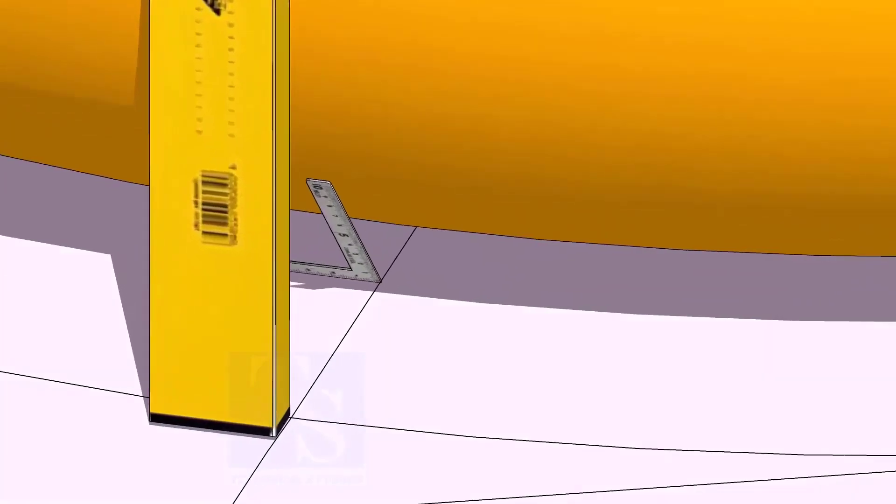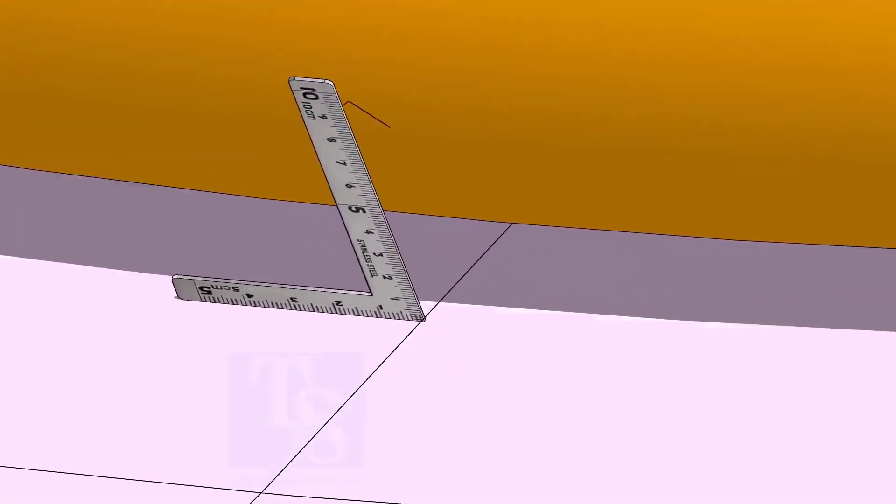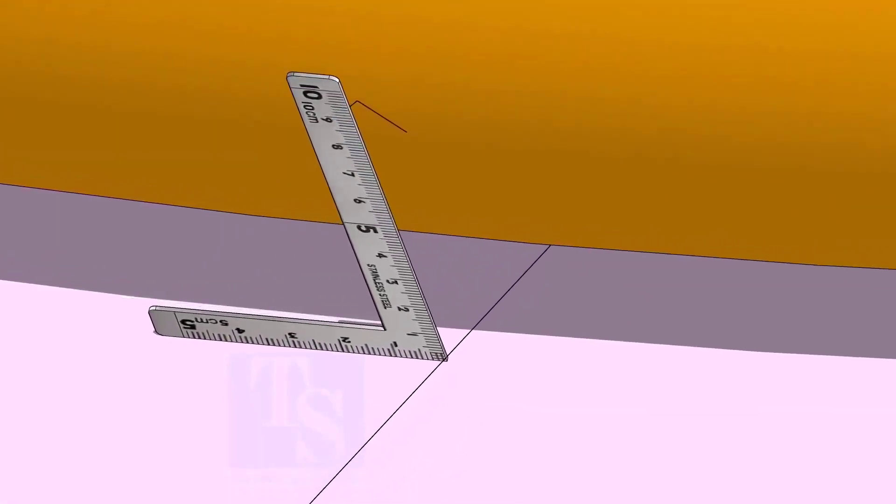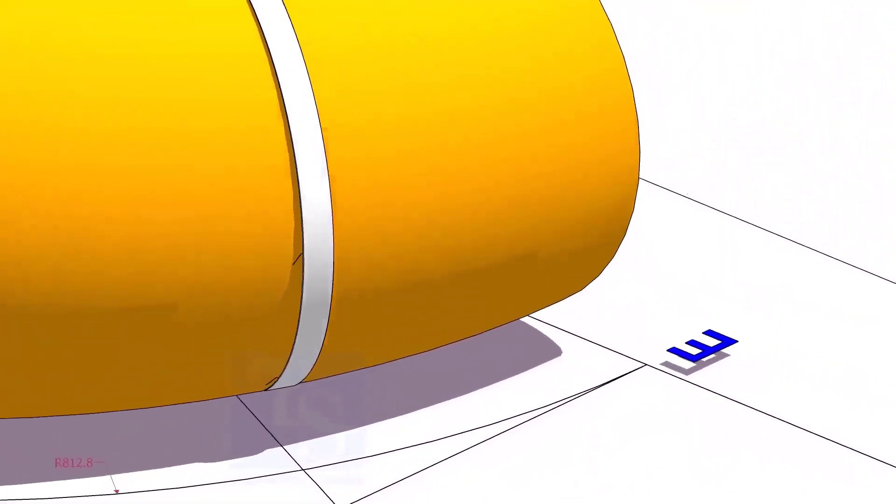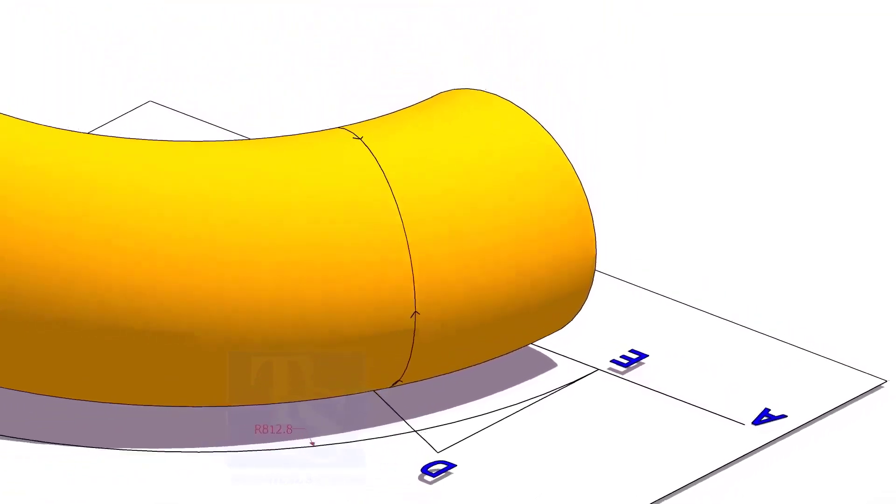At the bottom side, use a small right angle and transfer the line to the elbow on both sides. Use a bend scale and connect the marks to form a circle around the elbow.